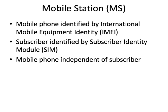Let's dive into the mobile stations a bit more. The mobile stations have a couple of different identifiers. First, each mobile phone is uniquely identified by something called an IMEI, or International Mobile Equipment Identity. The subscriber — which is a different identifier — is identified by something called a SIM, or the Subscriber Identity Module. The mobile phone is independent of the subscriber. You may have done this yourself, where you've taken your SIM out of one phone and put it into a different phone.